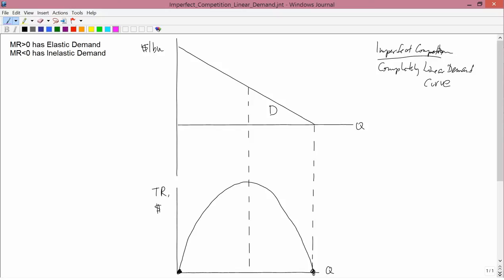Next, recall what we learned in the previous video: marginal revenue being greater than zero corresponds to an elastic portion of the demand curve, and marginal revenue less than zero corresponds to an inelastic portion of the demand curve.